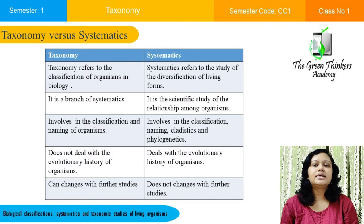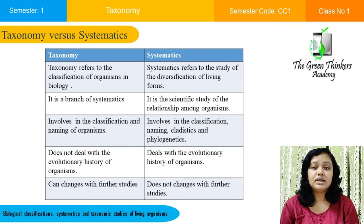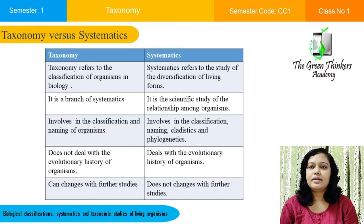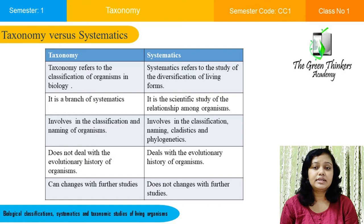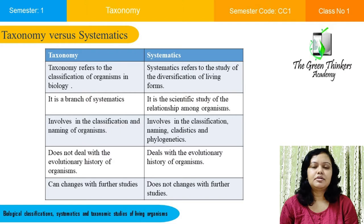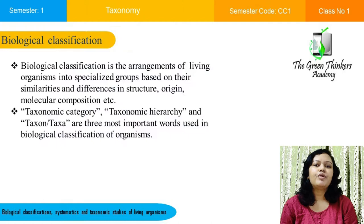There are some basic differences between systematics and taxonomy. Systematics is the study of relationships of organisms whereas taxonomy is a branch of systematics. Systematics is a scientific study of diversification of organisms whereas taxonomy deals with the classification of organisms. Taxonomy provides naming and classification, whereas systematics also incorporates cladistic and phylogenetic studies. Taxonomy can be changed with further studies but systematics cannot.